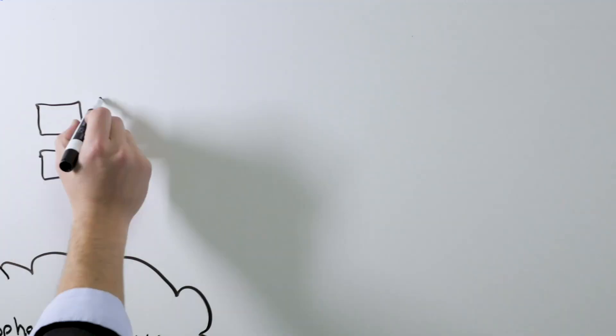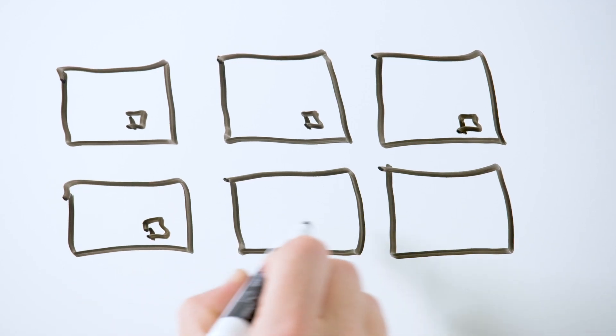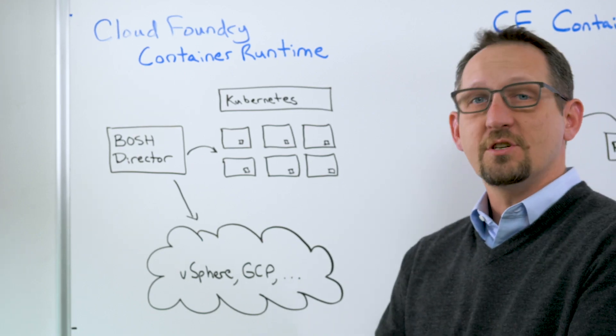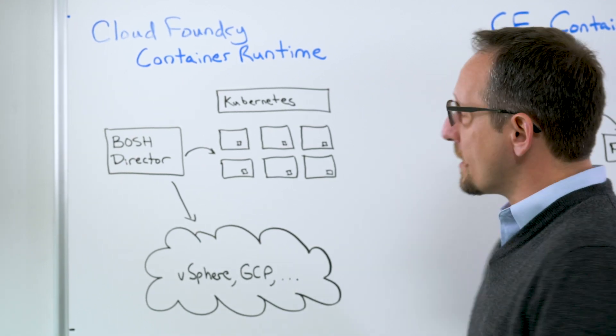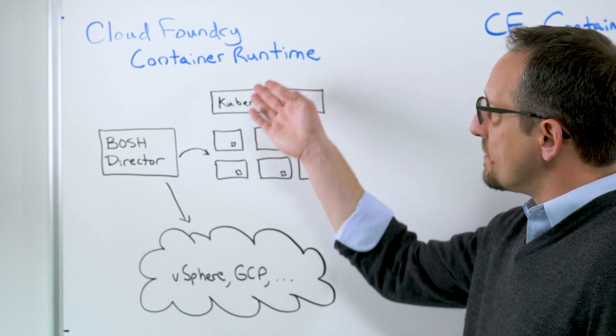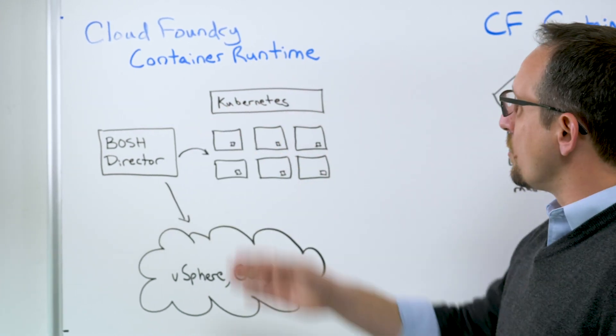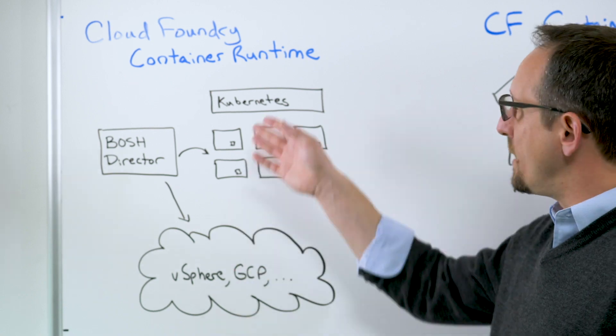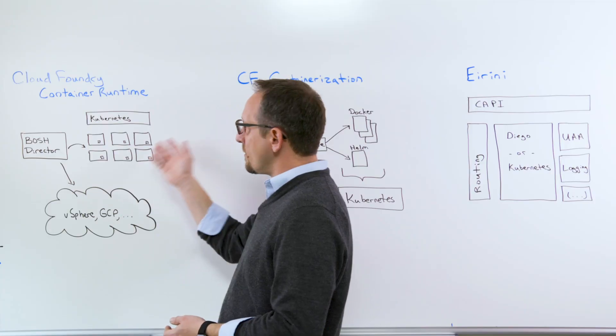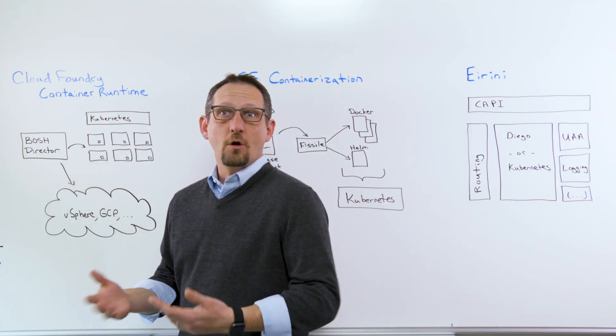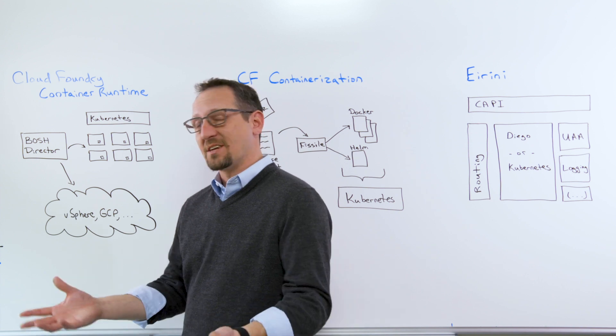It installs a small agent on each one of those machines, and that agent lets it give that machine jobs to do. So for example, the BOSH director to make Kubernetes work will deploy the etcd cluster, the Kubernetes master nodes, and then the rest of the pool of nodes that are going to host the containers that Kubernetes is responsible for scheduling.